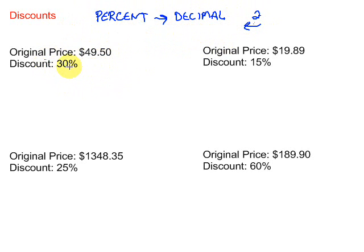So in this 30%, the decimal point is after the last zero here. So we're going to go two spots to the left, so 1, 2. So it would be 0.3. So we're going to multiply 49.50 by 0.3 or 0.30, same thing.